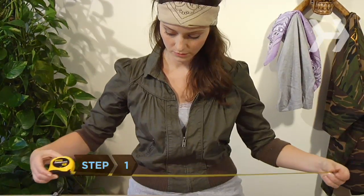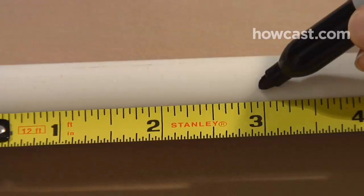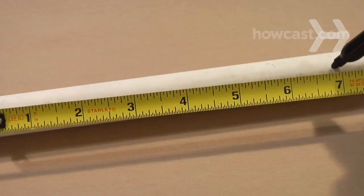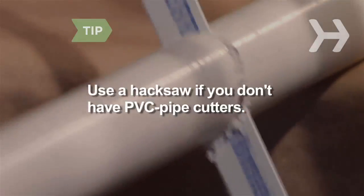Step 1. Measure, mark, and cut the pipe into one 1-inch segment, five 3-inch segments, and one 7-inch segment. Use a hacksaw if you don't have PVC pipe cutters.